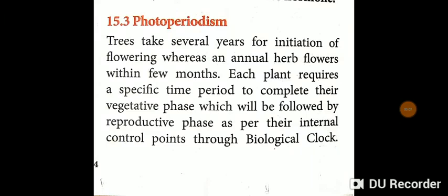Hello students, in the 11th standard botany chapter 15 — photoperiodism. Trees take several years for initiation of flowering, whereas annual plants flower within a few months. Each plant requires a specific time or period to complete their vegetative phase, which is followed by the reproductive phase, as per internal control points through the biological clock.